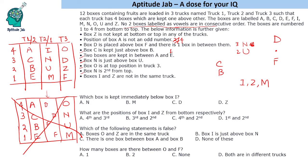We have utilized all the statements. We cannot find a concrete solution. This can be tracked one or two interchangeably. Which box is kept immediately below box I? N is kept just below I. What are the positions of I and Z from bottom and top respectively? I is fourth and Z is second. Which of the following statements is false? O and Z are in the same track, that is true. Box I is just above box N, that is also true. There is one box between A and B. That is also true. So all of these statements are true. How many boxes are there between O and F? Between O and F there are two boxes. That is the solution to the set and the answers to the questions.